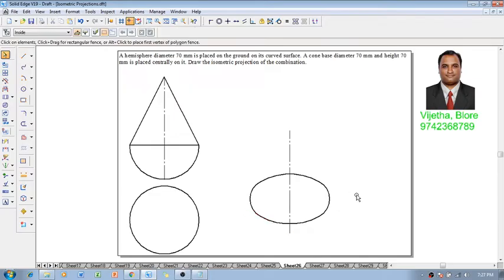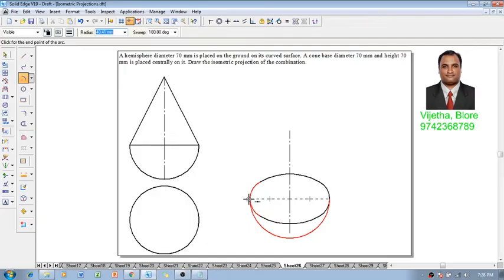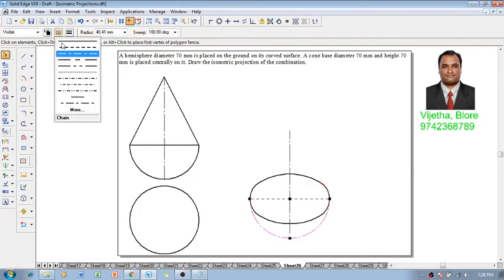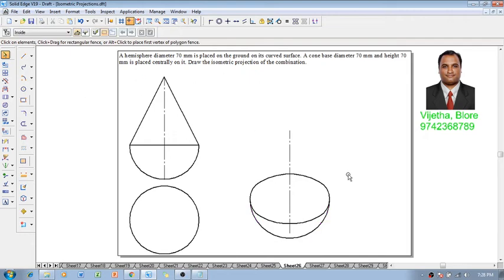Let me delete all the unwanted lines. Then use the command circle by center point or arc by center point. We take this point as the center and this midpoint as the radius to draw the hemispherical portion at the bottom. This line should be a continuous line with thickness of 0.5 mm, which completes the construction of the hemispherical portion.